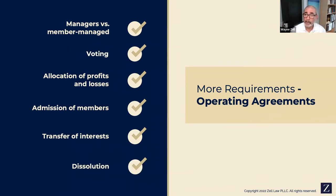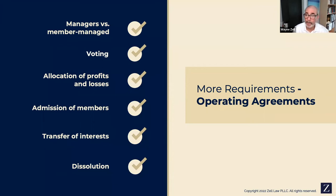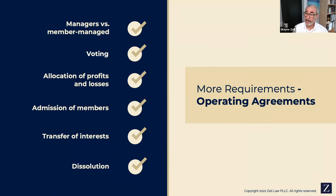The operating agreement also addresses under what circumstances the LLC will dissolve. Some state statutes require dissolution on the death of a member — which may not be what you intended. You put provisions in your operating agreement saying the LLC will last in perpetuity, or for some long period of time. LLCs can last in perpetuity in virtually every state. You also expressly state that the LLC does not dissolve on the death of a member — the estate or trust of that member can acquire ownership and continue operating it.